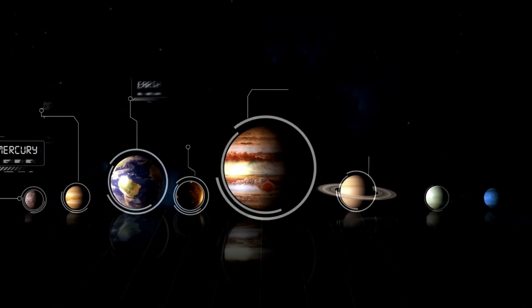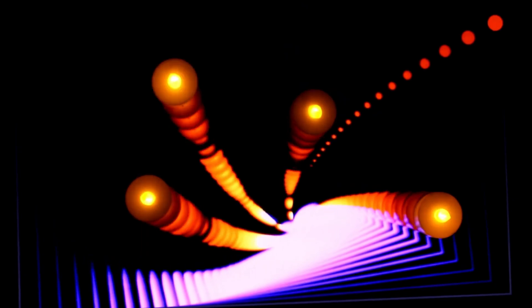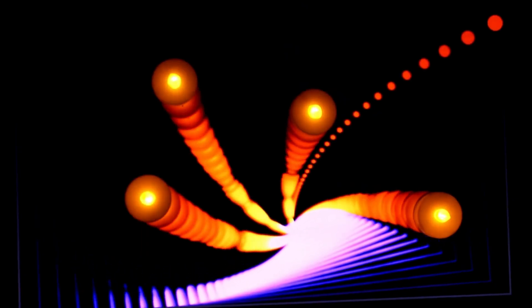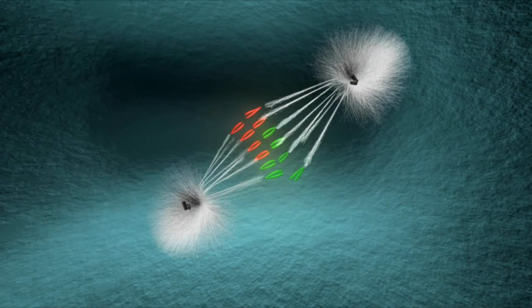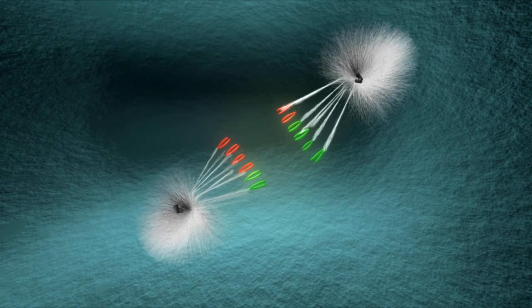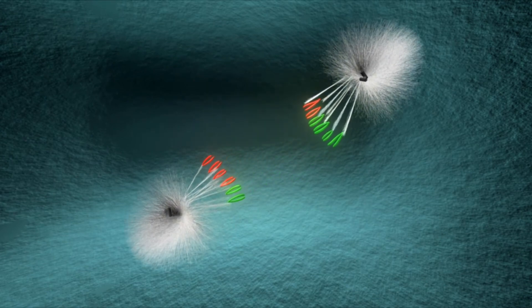Some of these exoplanets are located in what scientists call the habitable zone, meaning they are at the right distance from their stars to potentially support liquid water and possibly life.